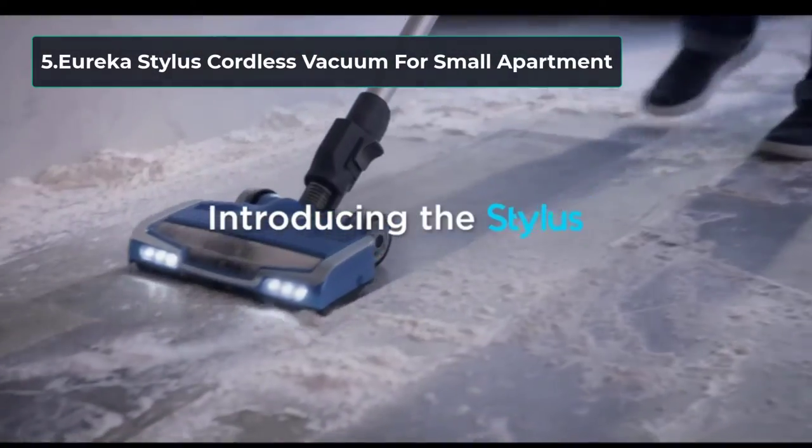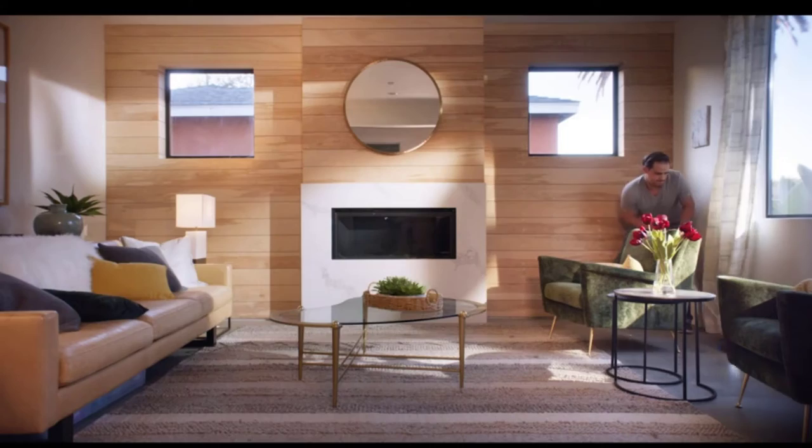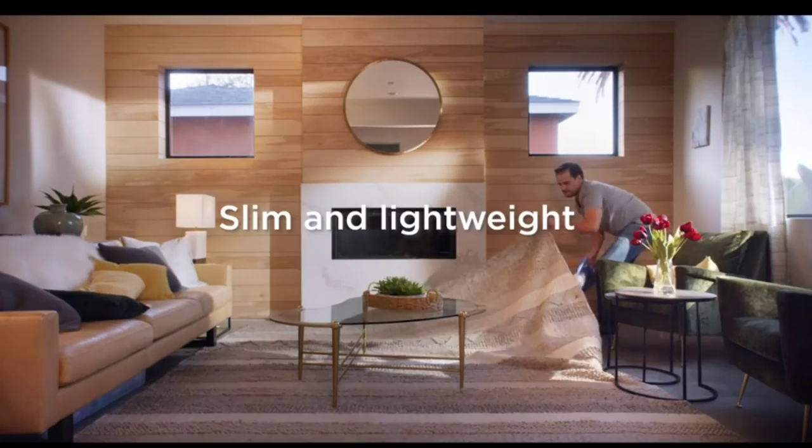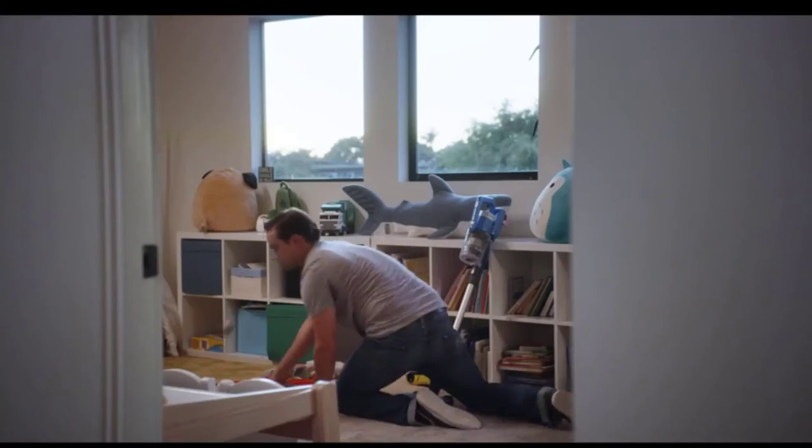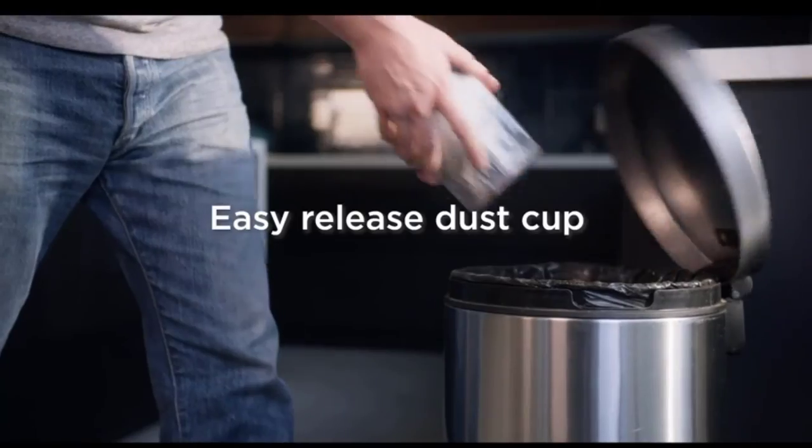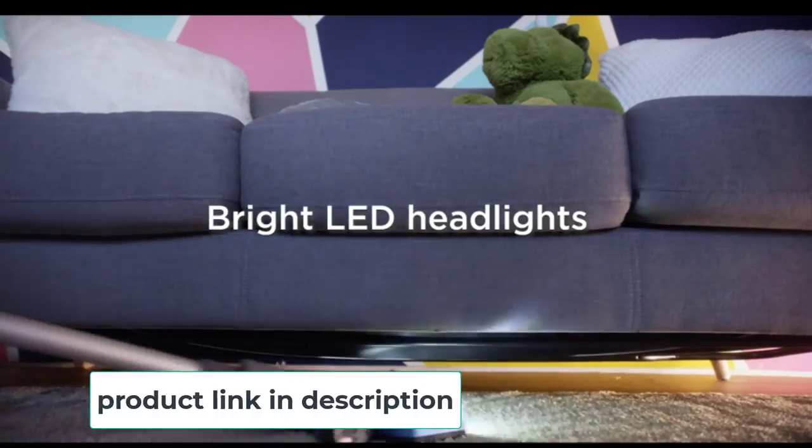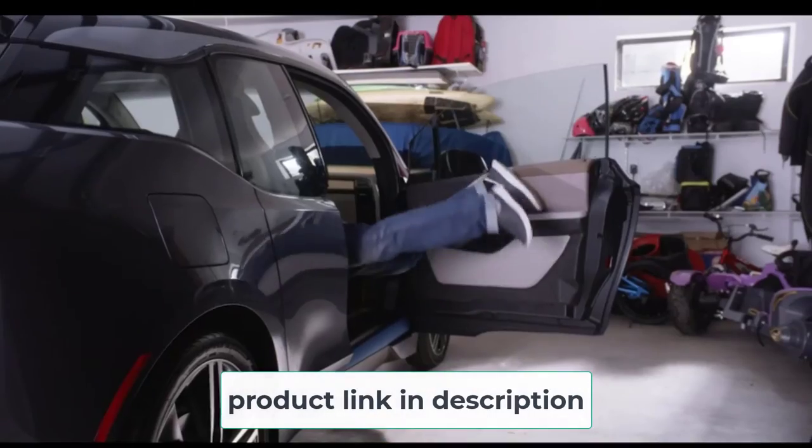At number five: Eureka Stylus Cordless Vacuum for small apartment. Equipped with LED headlights, this Eureka Stylus Cordless Vacuum allows you to clean in dark places and find easily hidden debris. This product has a 350W powerful BLDC motor, so that it can work extremely effectively on both carpets and hard floors.